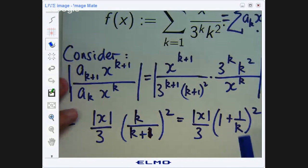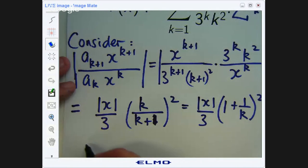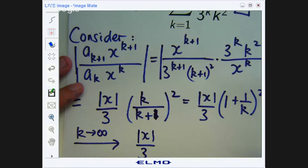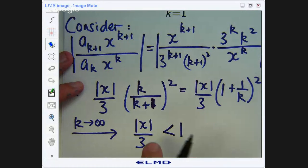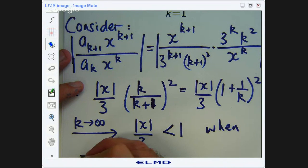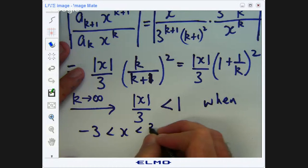So it'll be 1 over 1 plus 1 on k inside. Now you can see as k goes to infinity, this thing's going to go to 0 and I get 1 squared, which is just 1. So I end up with this. The ratio test tells us that when that ratio is strictly less than 1, the series converges. So let's find all the x values that make absolute x on 3 strictly less than 1. So we've got absolute x less than 3. Get rid of the absolute value signs and we'll get the following.